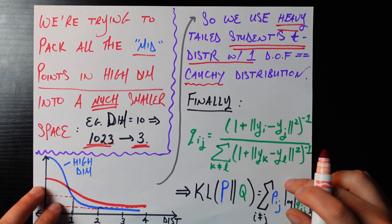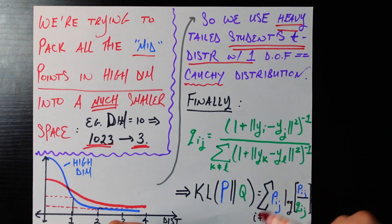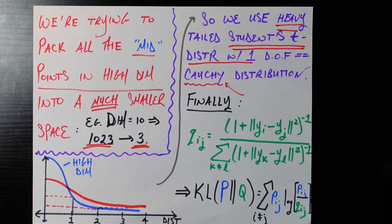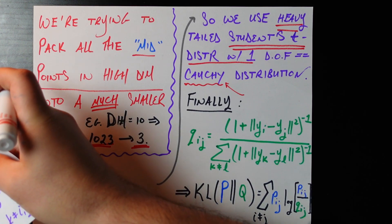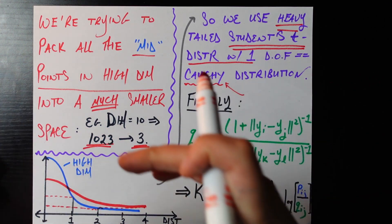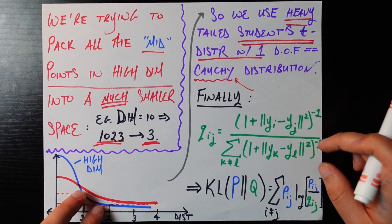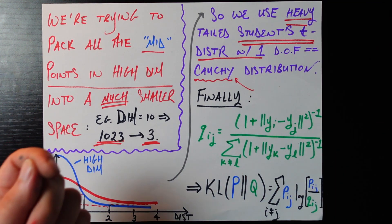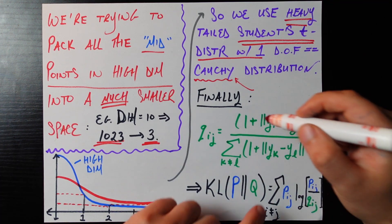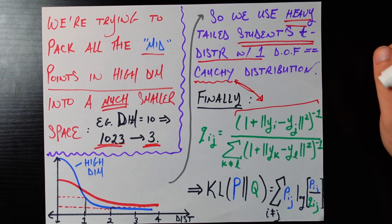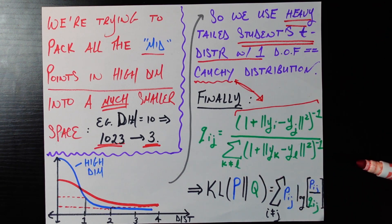Now that we've accepted we're going to use a one degree of freedom Student's t-distribution — more simply known as a Cauchy distribution — we define q_ij in a form mirroring the p_ij form. Q_ij is the similarity between the i-th and j-th lower dimensional embeddings yi and yj, defined using the Cauchy distribution PDF in the numerator, normalized by dividing by all other data points in the denominator.